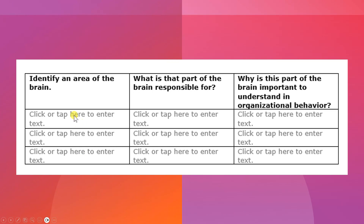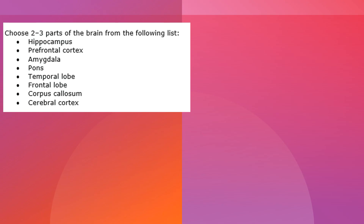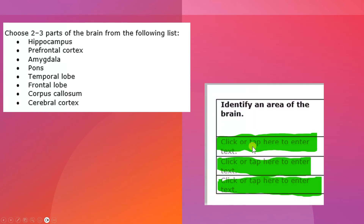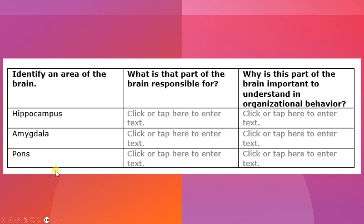You only need to click or tap in order to enter the text. You're going to choose the two to three parts from the list and they will go into this part of your chart. Once you've entered them, this is an example of what it will look like — all you're doing is entering in their names. In this example I picked hippocampus, amygdala, and pons. That's all you have to do to complete that first piece of your assignment — just enter in the names and identify them in your first column.